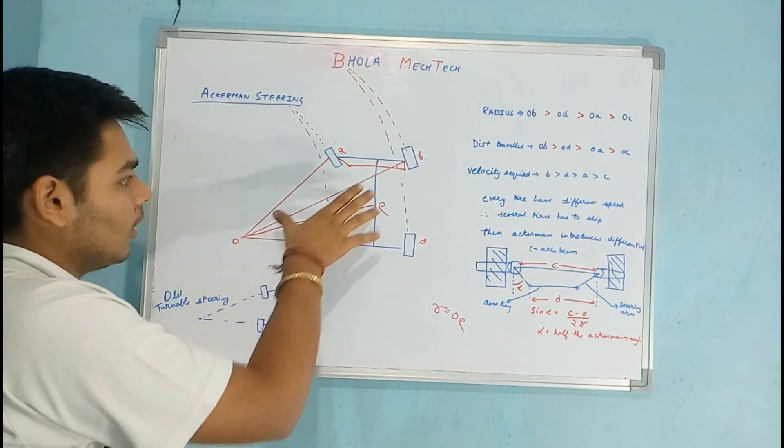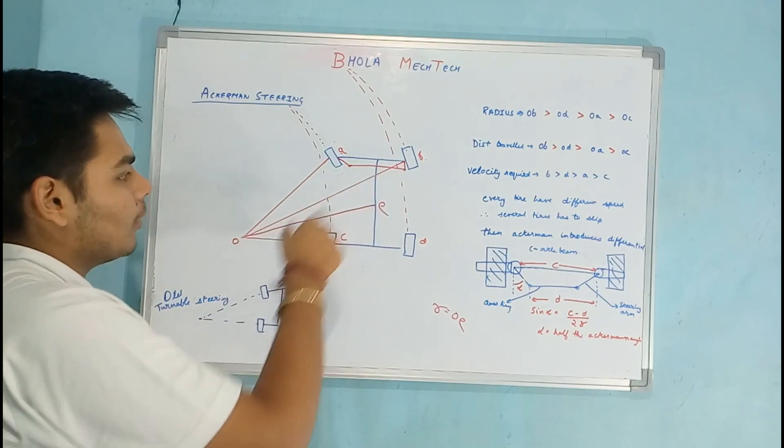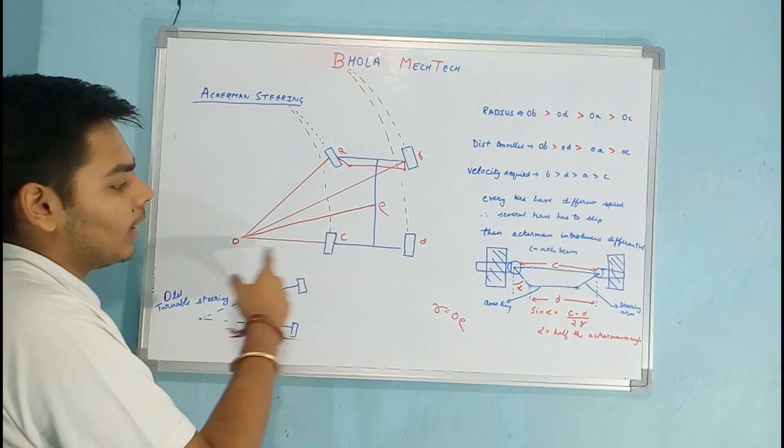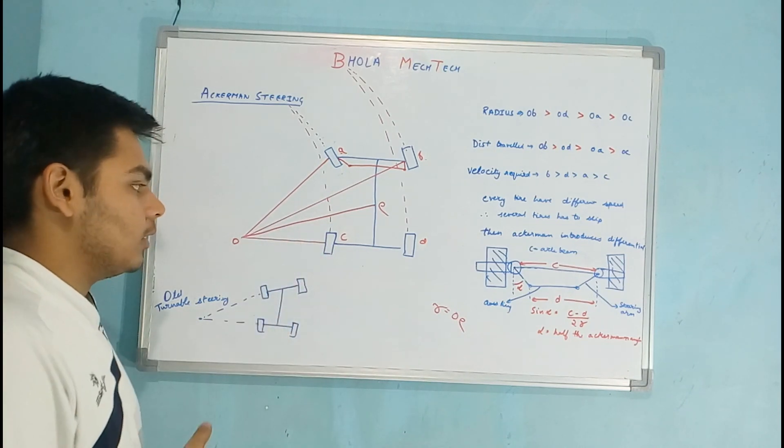Since the radius is smallest, then circumference traveled by this tire of C will be smallest. This means the distance traveled by the tire of C will be smallest.